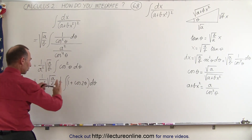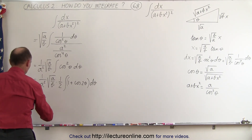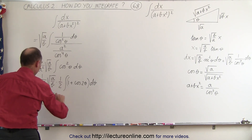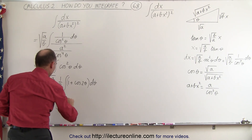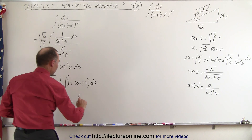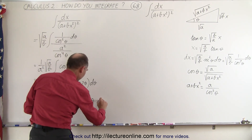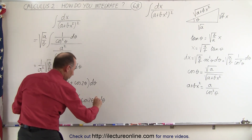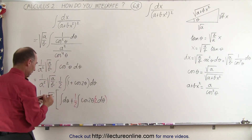We're going to separate those two integrals. This becomes equal to 1 over 2A squared times the square root of A over B. Then we have the integral of D theta plus the integral of the cosine of 2 theta — and we're going to need a 2 D theta here, otherwise we can't integrate this. So we need a 2 D theta, and of course we also have to divide by 2.